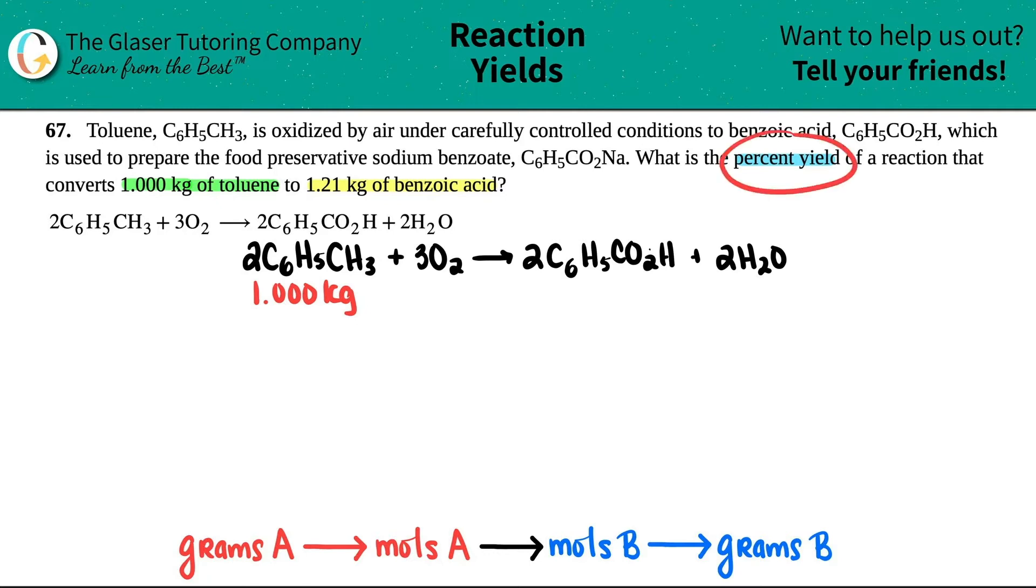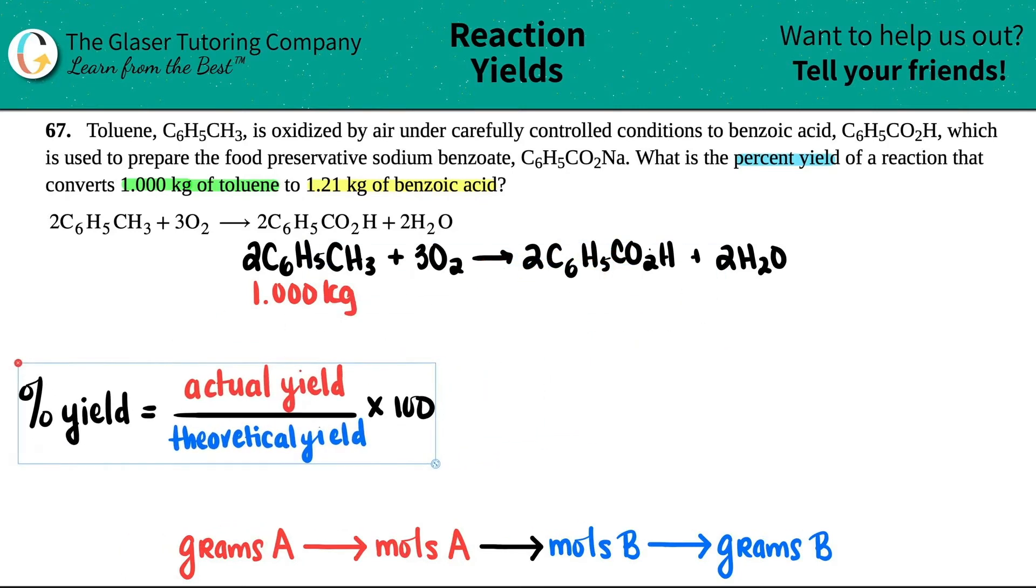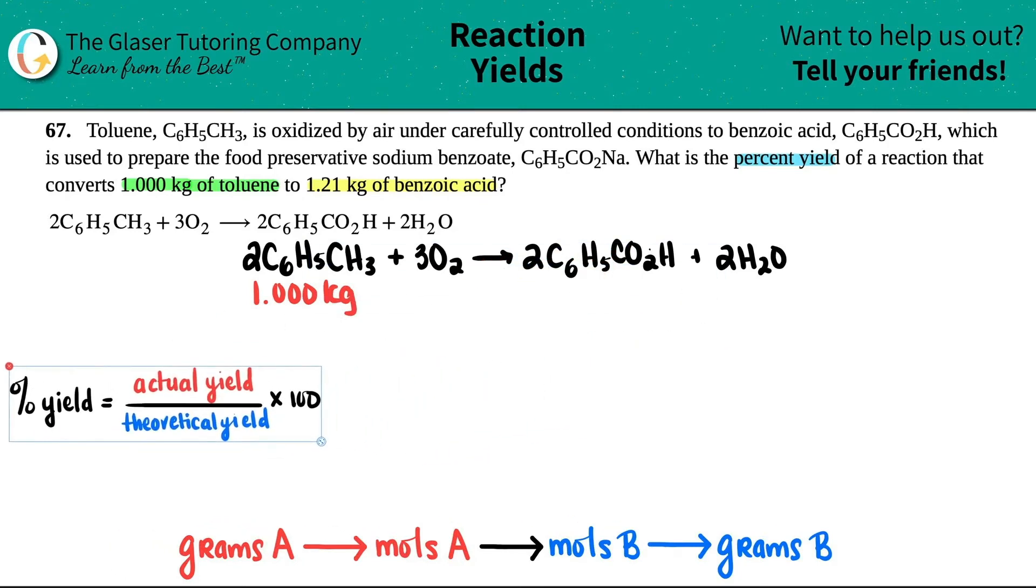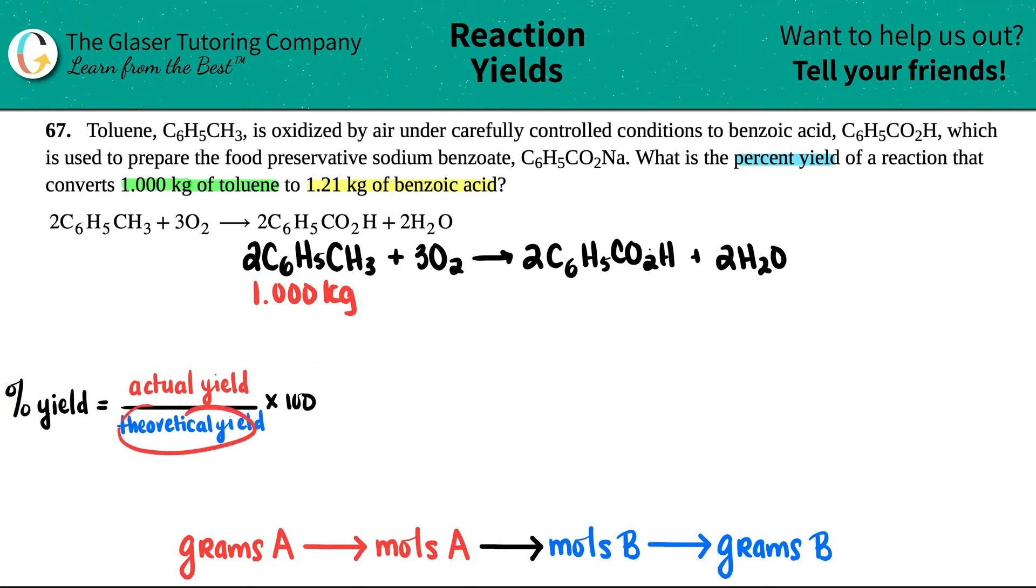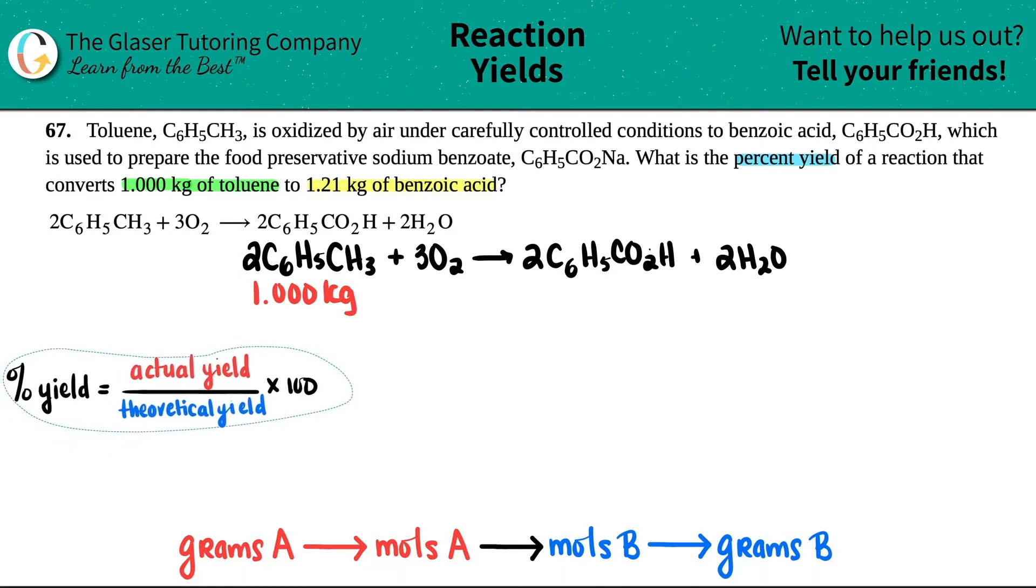The next thing I'm going to do after I try to center this, is write what we have. Now they're asking for what is the percent yield? We'll get into that in two seconds, but we're converting basically one kilogram of toluene, which they stated was this. So I have 1.000 kilograms of this.